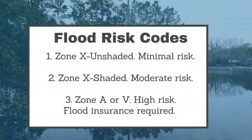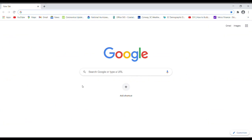First, a little code-ology. FEMA uses codes to identify flood risk. Your highest risk is associated with A's or V's — typically you'll see something labeled AE as a very high risk zone. Zone X shaded indicates a moderate risk zone, and zone X unshaded represents minimal risk. Learn the codes and let's move on.